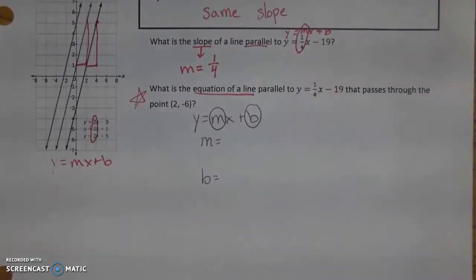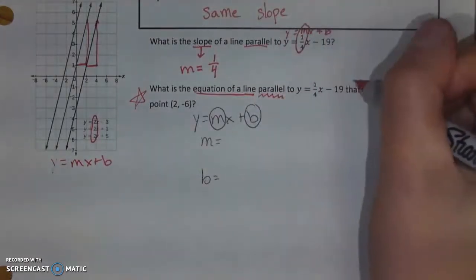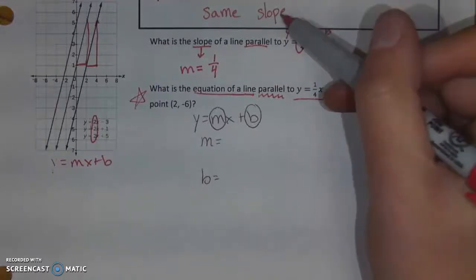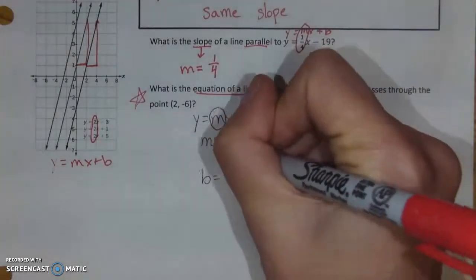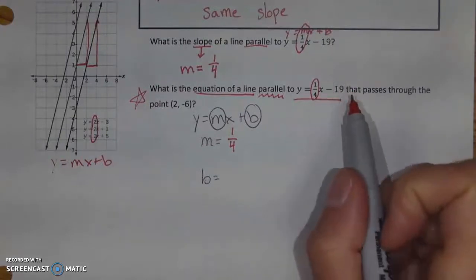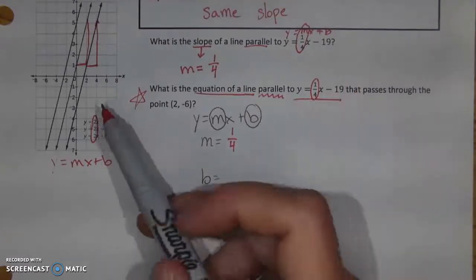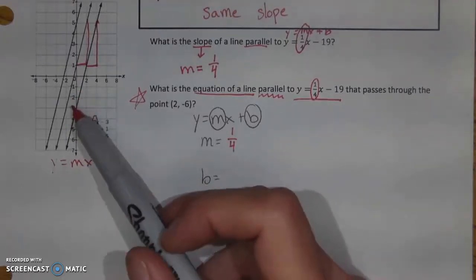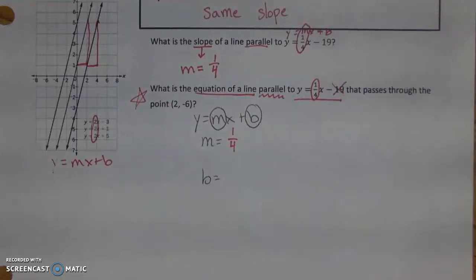I'm told this line is parallel to y equals one-fourth x minus 19. When I know that lines are parallel, they have the same slope. So I can take the slope from this line — one-fourth — and drop it in for m. You might be tempted to grab the negative 19 and use it for b, but just because lines are parallel does not mean they have the same b value. If they're parallel, they're not the same line, so I'll cross out that negative 19 so I don't grab it by accident.